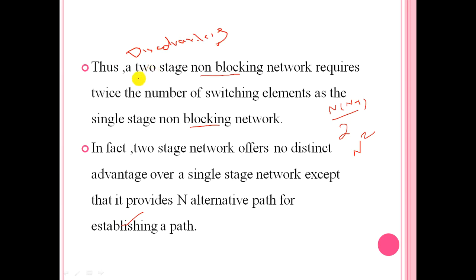A two-stage non-blocking network requires twice the number of switching elements compared to a single-stage non-blocking network. We showed that the number of switching elements required in a two-stage network is 2n squared, which is more than a single-stage network. So the conclusion was that a two-stage network offers no distinct advantage over a single-stage network, except that it provides an alternative path for establishing a connection.